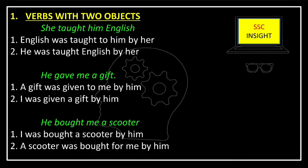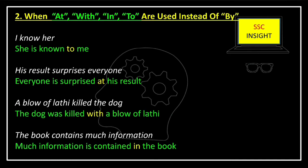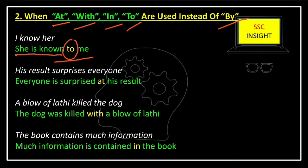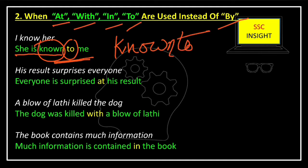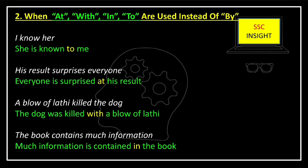In case of two objects, we can use either of the given objects in passive voice. Now there are certain verbs where 'by' is not used when making passive voice. Instead of 'by,' we use 'at,' 'with,' 'in,' 'to,' etc. For example: 'I know her' — its passive voice will be 'She is known to me.' 'She is known by me' is not appropriate here because the correct preposition that goes with 'know' is 'to.'